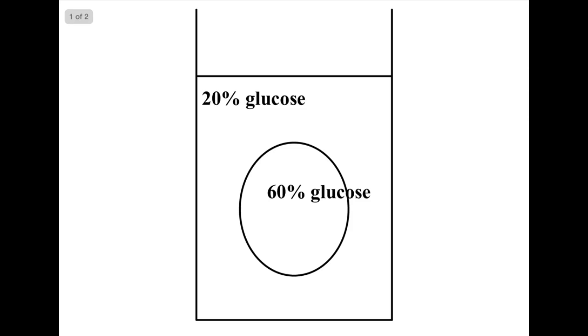A different example here. We have 20% glucose, which means 80% water. 60% glucose in the cell, which means 40% water.